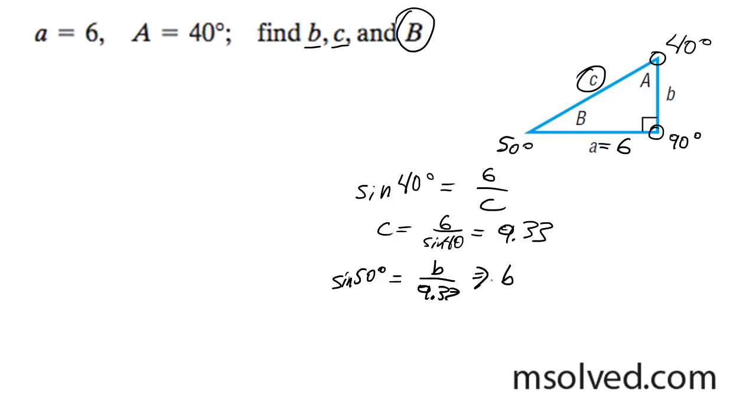Finally, b is going to be equal to 9.33 times sine of 50, which gives us 7.15 approximately.